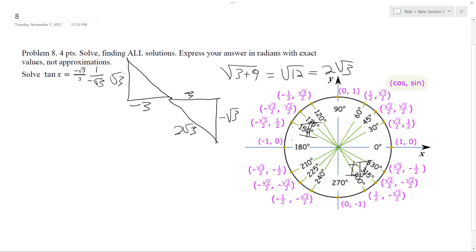So over here, five π over six, and eleven π. Yep.